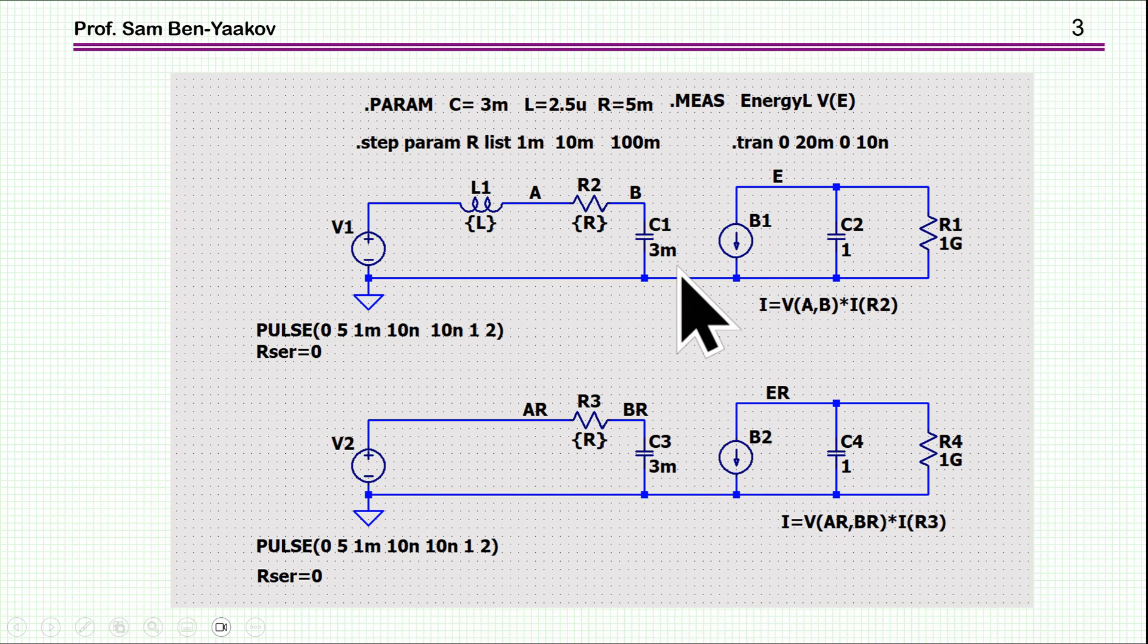So, let's see what it is all about. To study the question of the losses, I've set up here a schematics, a two-part to this schematics. This represents the actual circuit we are talking about. This is the inductor, resistor, and capacitor. This is the voltage. I'm assuming 5 volt at closure. And then I've put here, actually, a calculation of the energy lost. And this is by looking at the resistor, voltage across it, and current across it, and integrating it by this capacitor, 1 farad. So, the voltage here is the energy lost during the process.